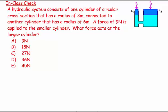Welcome. This question says a hydraulic system consists of one cylinder of circular cross-section that has a radius of 3 meters, connected to another cylinder that has a radius of 6 meters. A 9 Newton force is applied to the smaller cylinder.